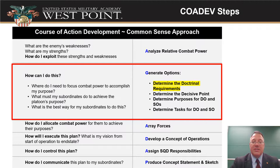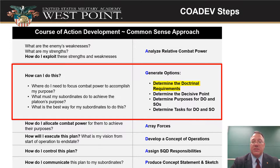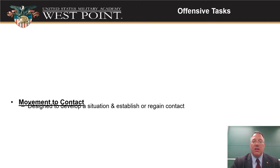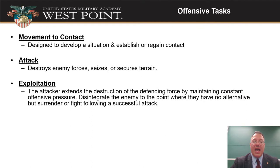The next step is to generate options — kind of like brainstorming, but we're going to be more deliberate about it. We figure out how to focus our combat power to get to our purpose, how our subordinates need to do things to support the platoon, and what's the best way for everybody to do this. We're going to start out with looking at our doctrinal requirements, because doctrine will give us some information. When we're doing our offensive tasks, doctrine breaks that down in different ways.